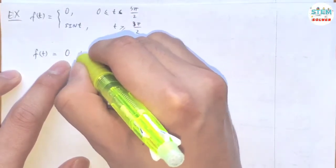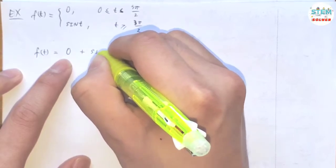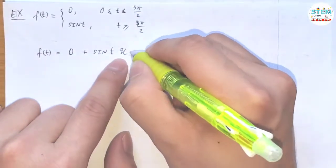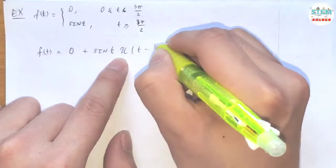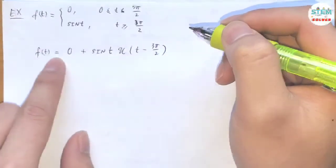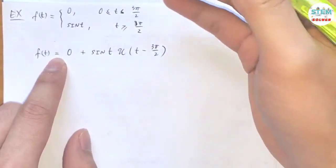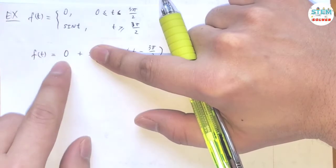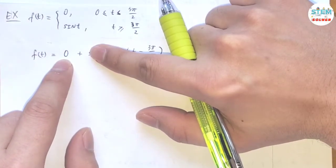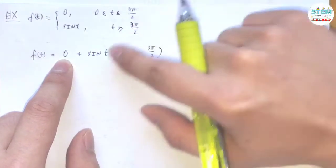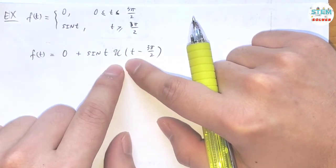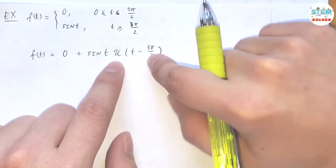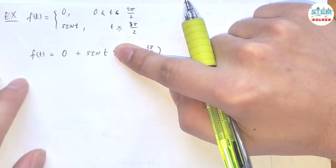The next piece is sin(t), so we just put it in. Then we need to have u of t minus 3π/2. So before 3π/2, this is 0 and the step function is just 0. When t hits 3π/2, this is turned on — u of this becomes 1 — so we have sin(t).